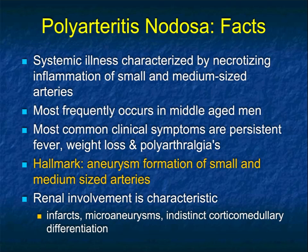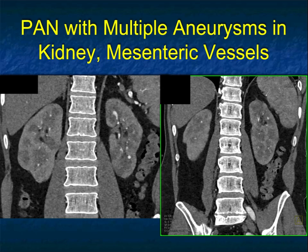One of the things about these aneurysms is they may be multiple — and not just two or three, but we're talking 20 or 30. It can indeed be very impressive, particularly in the kidneys. It can lead to infarction and to indistinct corticomedullary differentiation.